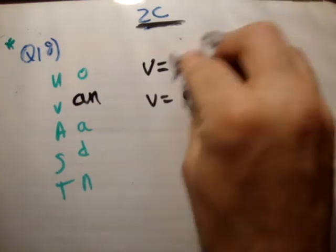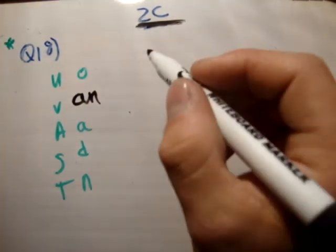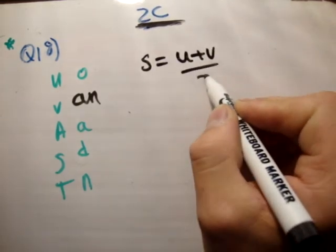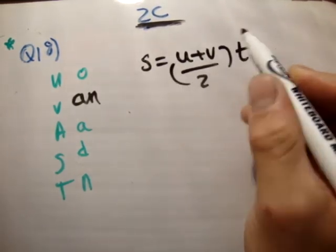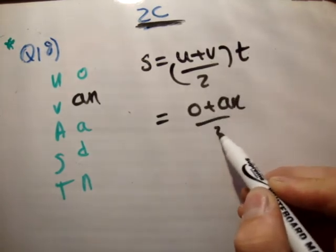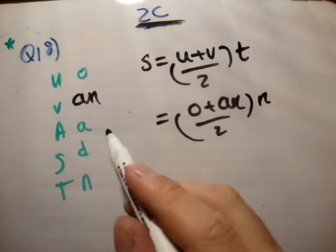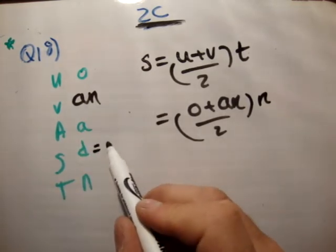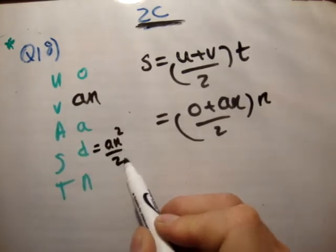Alright. Get the distance. s is equal to u plus v over 2 times t, is equal to 0 plus an over 2 times n. So, it's an squared over 2. Like that.